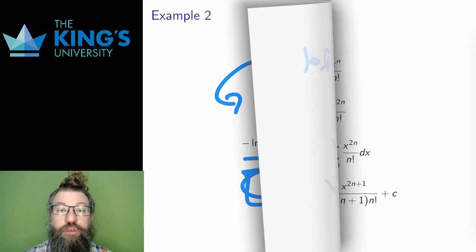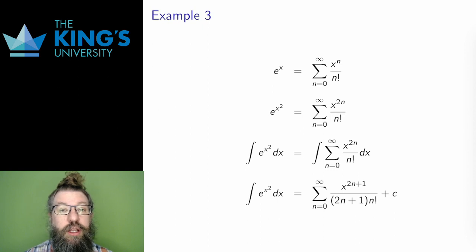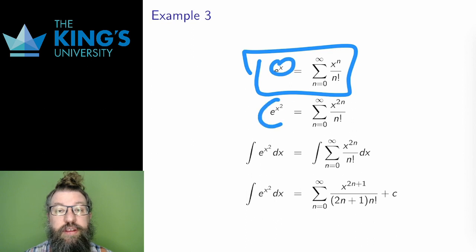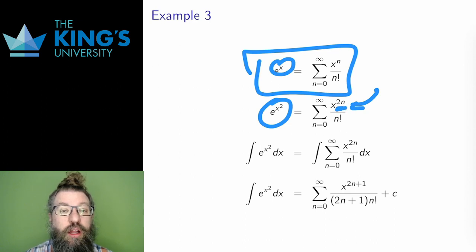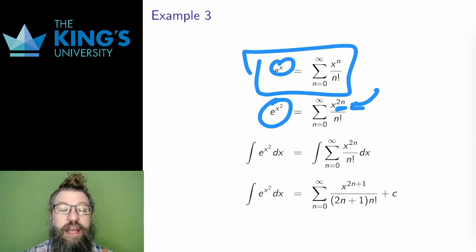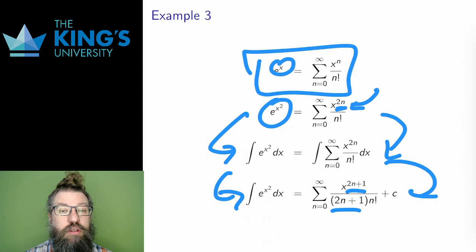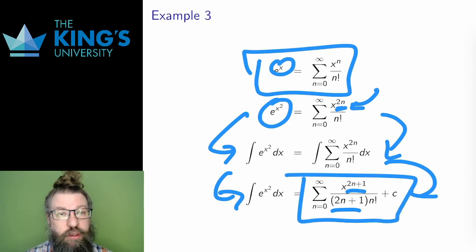Here is another example of using a known series to build a new series. This is the Maclaurin series for the exponential, which I calculated at the start of this video. I can do composition with series. If I replace x with x squared, I get this series, which still is a series but only has even powers of the variable. For the odd powers, this means they all have coefficients of 0 — a polynomial doesn't need to have all of its powers; missing powers implicitly have coefficients of 0. So now I have a series for e to the x squared. I can integrate that, increasing the exponent by 1 and dividing by the new exponent. And this is a series for the antiderivative of e to the x squared.